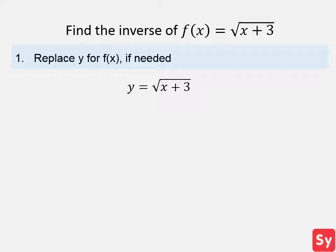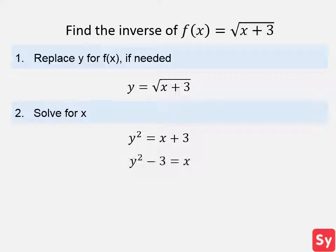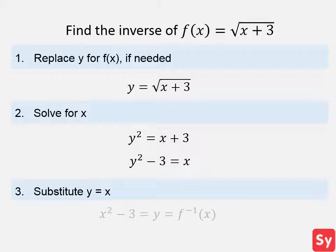Next step, we want to solve for x. So we square both sides of the equation, and then subtract 3 from both sides. Next step, we want to substitute x with y and y with x. So we have y equals x squared minus 3, and this is the inverse.